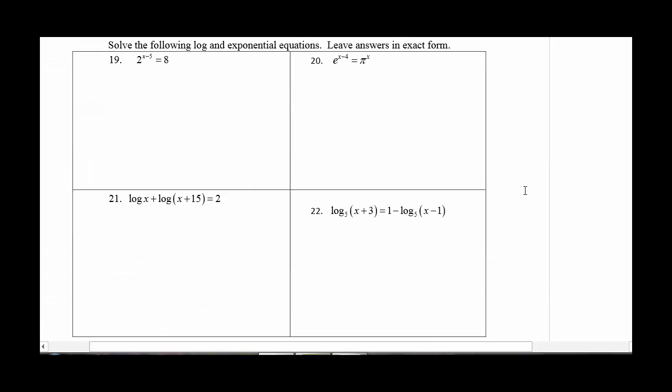19 through 22, these are all solving equation type things. It should not require a calculator at all. As a matter of fact, I tell you, just leave it in exact form. So number 19, I'm looking at a base of 2 and 8, so I should be able to find a common base there. So 2 to the x minus 5, and 8 is 2 cubed.